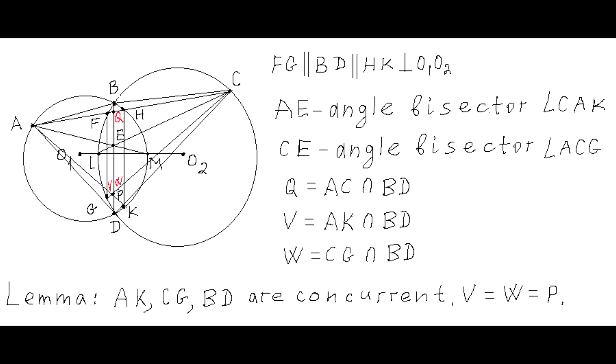There may be a simpler and shorter proof of this fact, but this is the algebraic proof that I have come up with. Let point Q be intersection of segment AC with segment BD, and point V be intersection of segment AK with BD, and point W be point of intersection of segment CG with BD.